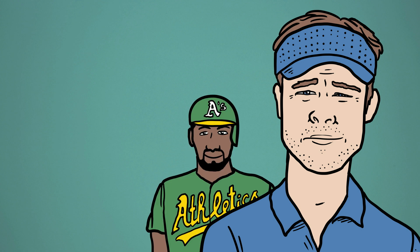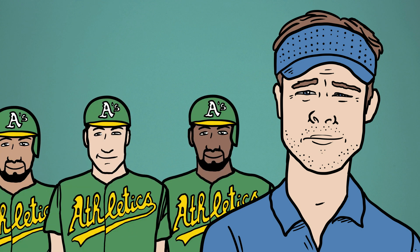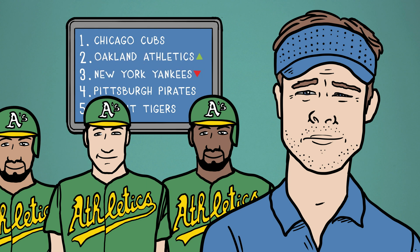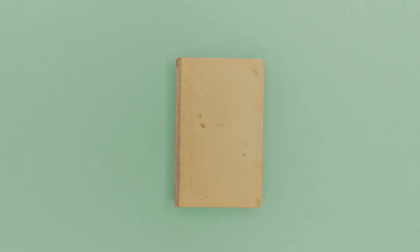In Moneyball, a famous Hollywood movie based on a real story, a successful baseball team is formed out of players who scored badly based on traditional baseball metrics but exceptionally good based on predictive statistical analyses. The use of historical data to forecast the future is called predictive business analytics.